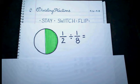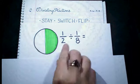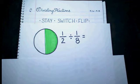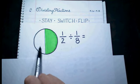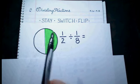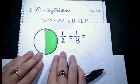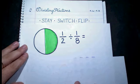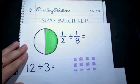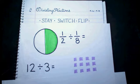As we start dividing fractions, I want to look at a model first of what dividing fractions looks like. So I have my first problem: 1 half divided by 1 eighth. Before I start working with this model, let's go ahead and look at a model of whole number division.